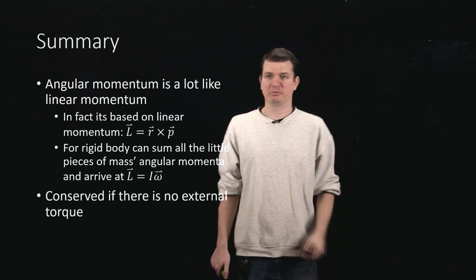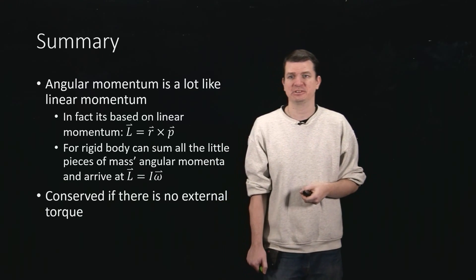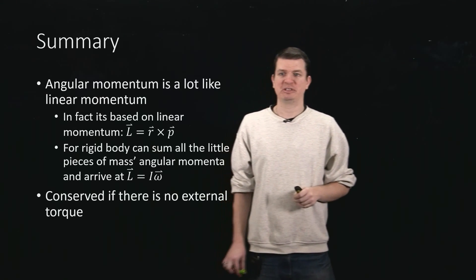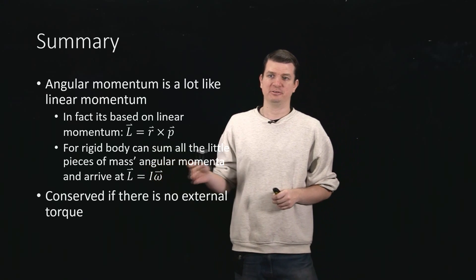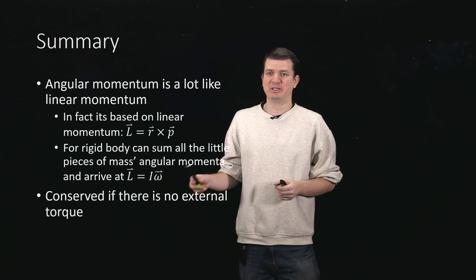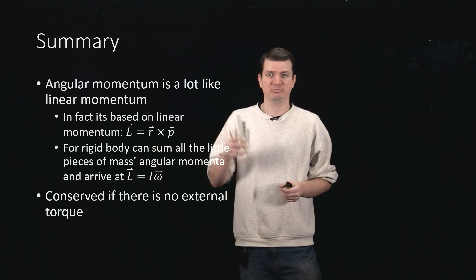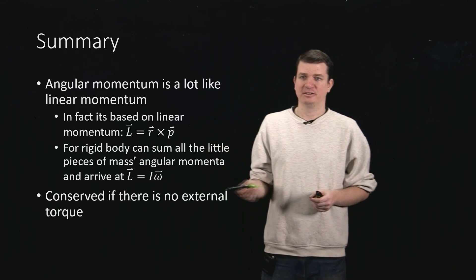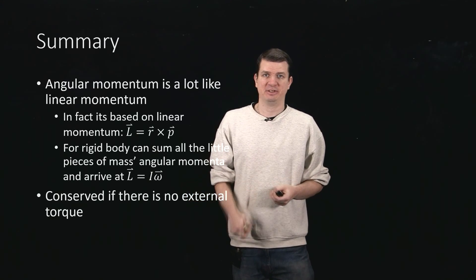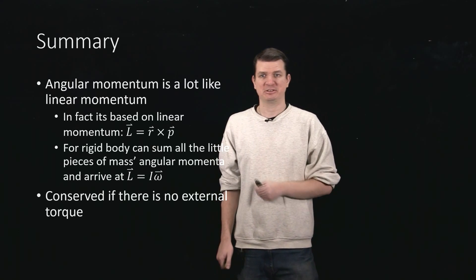In summary, angular momentum is a lot like linear momentum — it describes how much you resist changes to your rotational motion. In fact, it's actually based on linear momentum: it is a cross product of your position vector with your instantaneous tangential linear momentum. For a rigid body you sum over every little contribution of momentum from every piece of mass, and when you do that you arrive at L equals I omega. And the conservation criterion is very simple: if there's no external torque acting on the system, angular momentum is conserved.